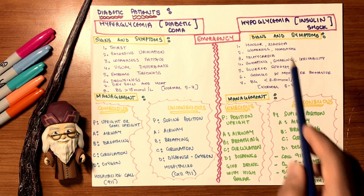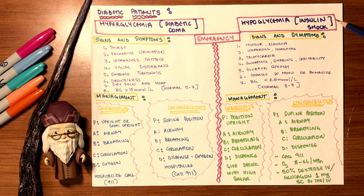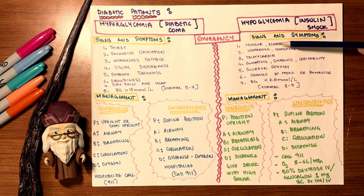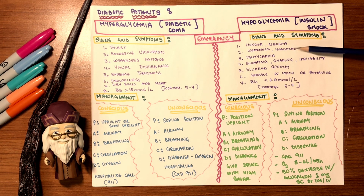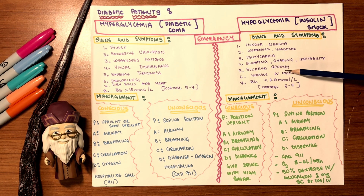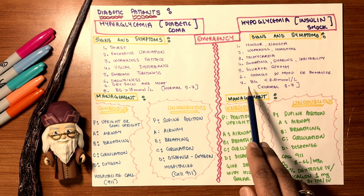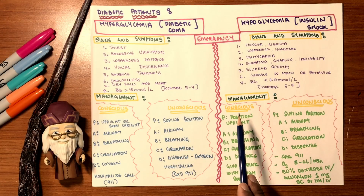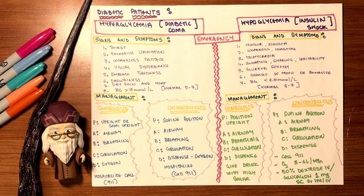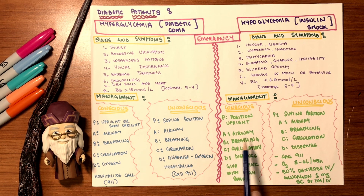Hypoglycemia is called insulin shock. Signs and symptoms include: hunger or nausea, weakness or headache, tachycardia (heart rate over 100), sweating, shaking, irritability, slurred speech, change in mood or behavior, and abnormal blood glucose levels. Management for a conscious hypoglycemic patient: position upright, ensure airway, breathing, and circulation are clear, then administer a high-sugar drink — in minutes their glucose level will rise.